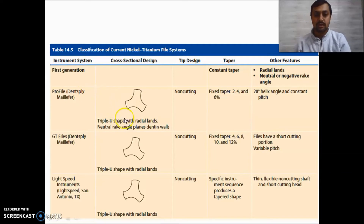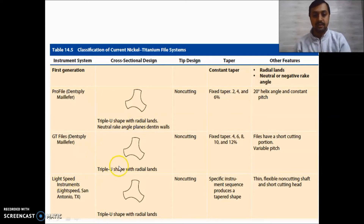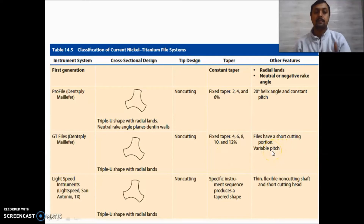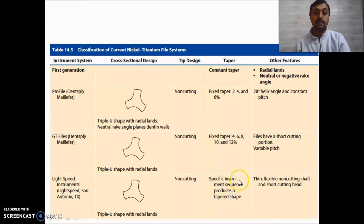Profile belongs to the first generation — it has a triple U-shape with radial lands and a neutral rake angle with constant pitch. GT files also have a triple U-shape with radial lands but have a short cutting portion and variable pitch. LightSpeed instruments have a triple U-shape with radial lands, a specific instrument sequence producing a tapered shape, and a thin flexible non-cutting shaft.